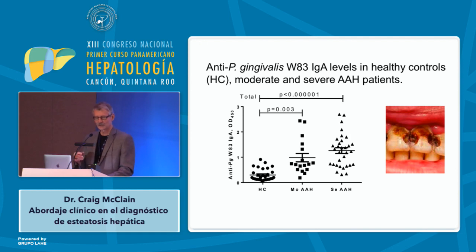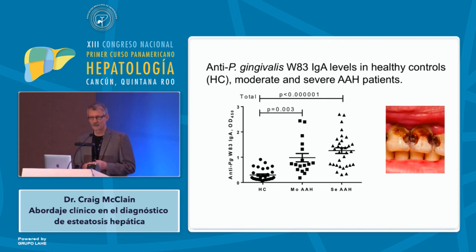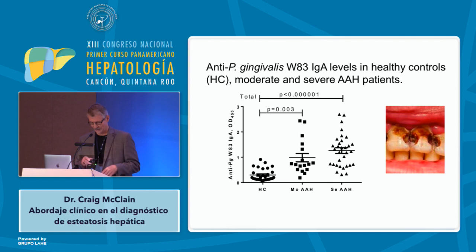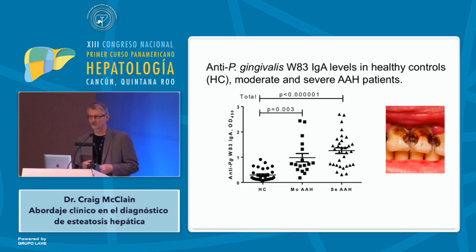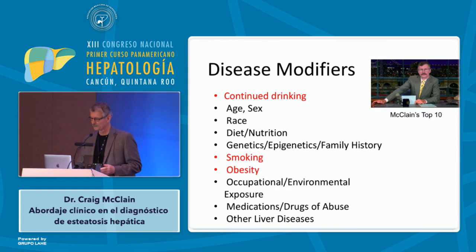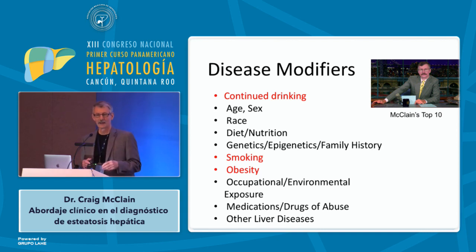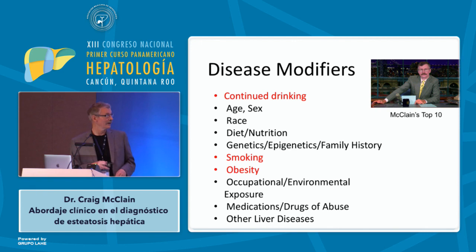We not only have alterations in bacterial products in the intestine, but also in the mouth. Recent unpublished data from our group looked at an oral bacteria that causes periodontitis, Porphyromonas gingivalis, showing higher levels in people with severe alcoholic hepatitis compared to moderate alcoholic hepatitis compared to healthy controls. Poor oral hygiene is frequently seen in alcoholic liver disease and in NAFL. Disease modifiers include continued drinking, genetics, and smoking and obesity as highly modifiable risk factors.